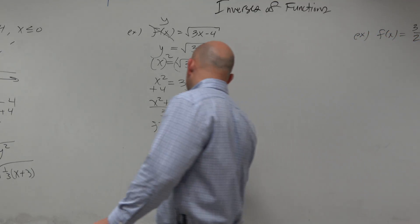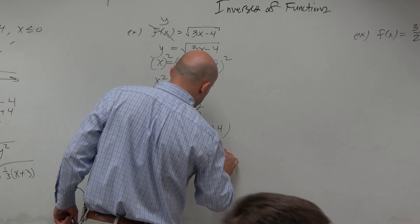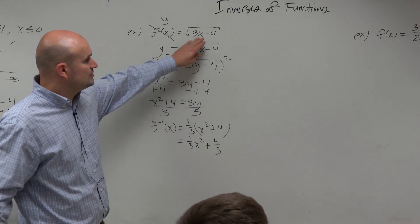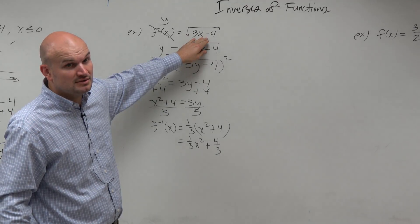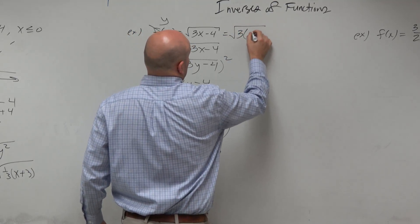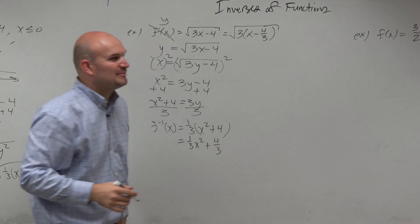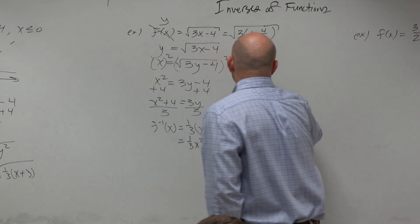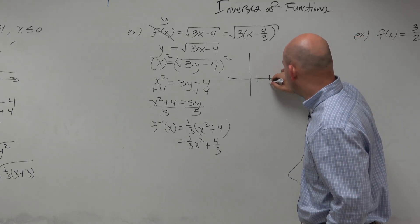Now, you obviously could distribute that to 1 third x squared plus 4 thirds. But here's the issue, guys. What's the transformation? Does anybody know what the transformation is here? It's not right 4. You've got to factor out the 3, right? Ah, remember that b? Stinks, doesn't it? So this is actually right 4 thirds, which is 1 and 1 third, roughly.